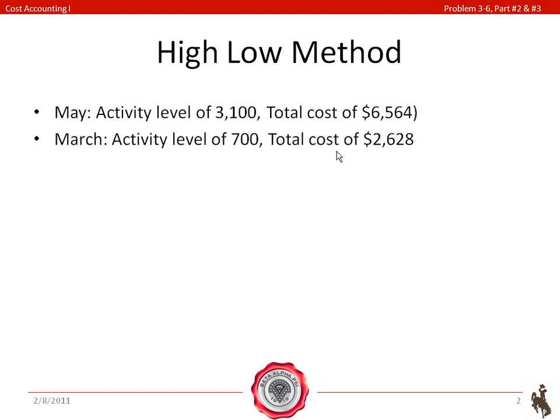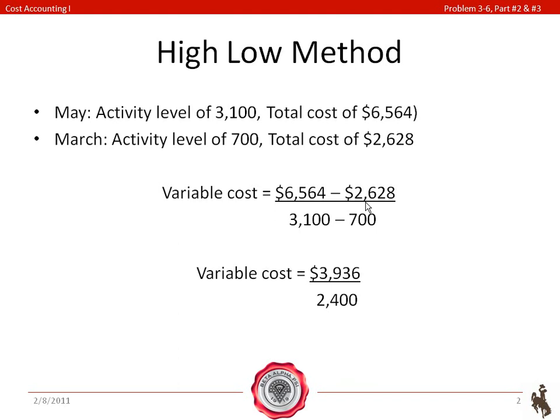Now that we have these two pieces of information, we can go ahead and find our variable costs. Variable costs are your change in total cost divided by your change in activity level. So, your numerator is going to be $6,564 minus $2,628 for your change in cost divided by your total activity level, which is 3,100 minus 700. And when you plug that all in, you should get variable costs of $1.64.